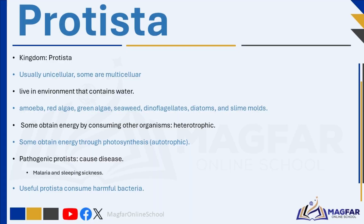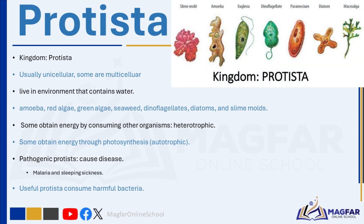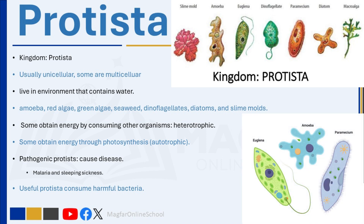Protists belong to the kingdom Protista. This group of organisms is separate from plants, animals, Monera, and fungi. The organisms classified into this group are usually unicellular. Protists live in any environment that contains water. Organisms that occur in the Protista kingdom include amoeba, red algae, green algae, seaweed, dinoflagellates, diatoms, and slime molds.